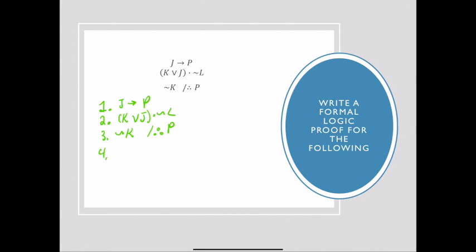So what am I going to do? I've got J implies P, I've got K or J and not L, and I've got not K. Well, the one thing I can see I can do if I look at my rules, rule 7, I can go ahead and simplify step 2. So that would give me K or J, and that was row 2 simplification.